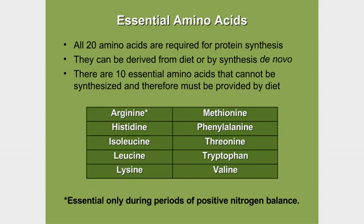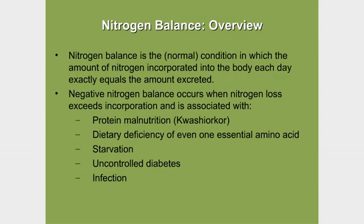Nitrogen balance is the normal condition in adults, in which the amount of nitrogen coming into the mouth every day in the form of protein or amino acids is equal to the amount of nitrogen being excreted every day in urine in the form of ammonia, urea, or creatinine.